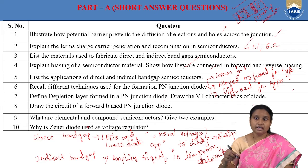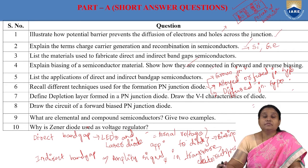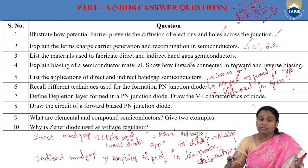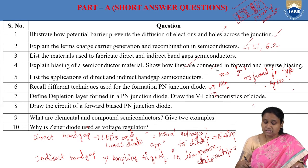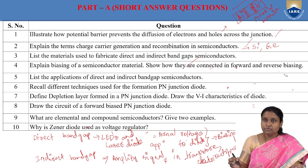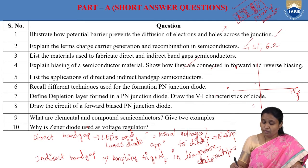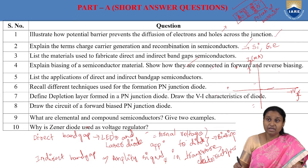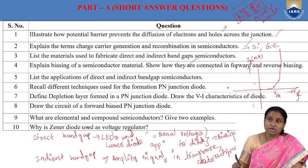Next: define depletion layer. When a PN junction is formed, due to diffusion of charge carriers a layer is formed in which charge carriers have no energy — it is depleted of free charge carriers. That layer is called the depletion layer. For VI characteristics of a diode, in forward biasing as we increase forward voltage, initially there is no change in current, but after a threshold voltage there is a sudden rise in current, because the depletion layer is completely eliminated at that voltage.